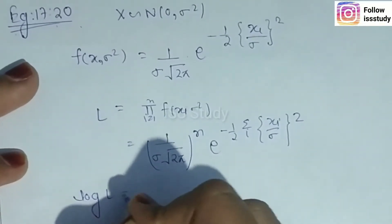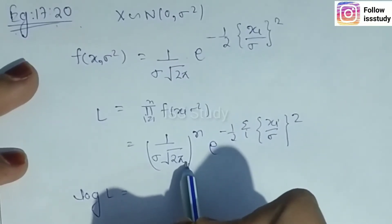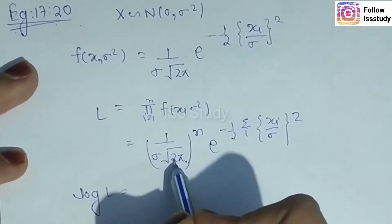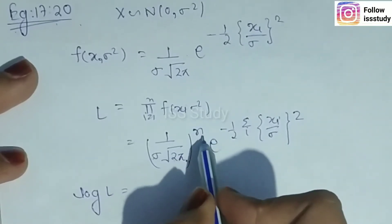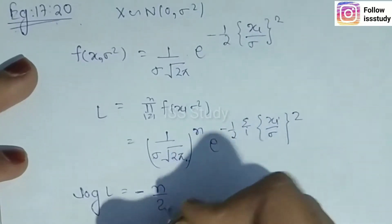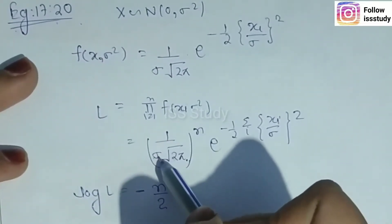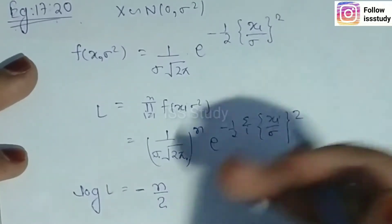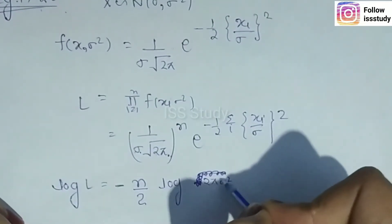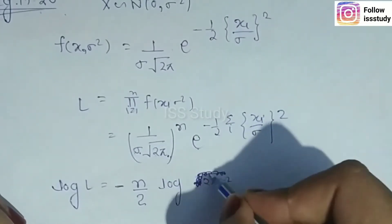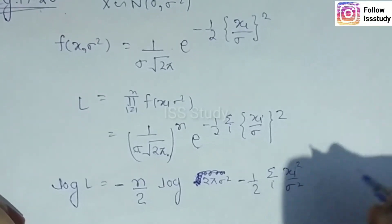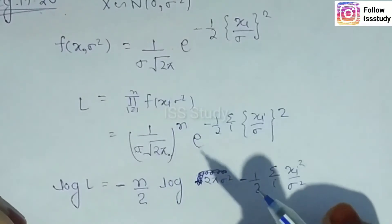Now we take the log-likelihood. Taking logarithm, we get: log L = −(n/2) log(2πσ²) − (1/2) · (Σxi²)/σ². We write it in this form so we can differentiate with respect to σ², since that is the parameter of interest for finding the MVB estimator.